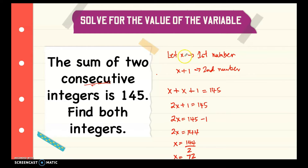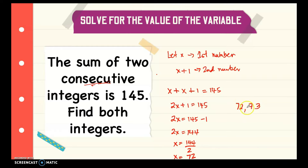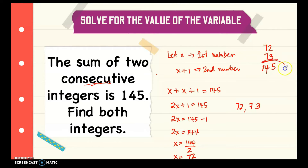So x equals 72, which is the first number. The second consecutive number is 72 plus 1, which is 73. Let's check: 72 plus 73 equals 145, so our answer is correct.